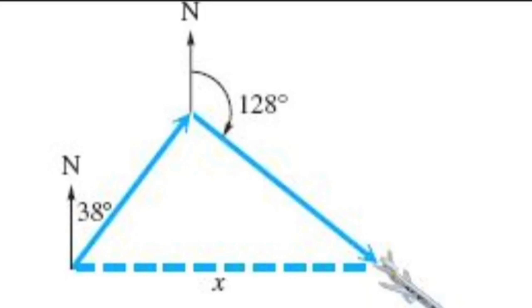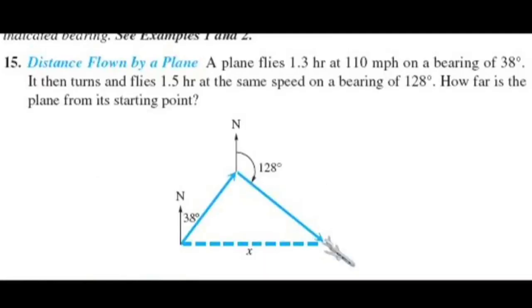Here, it looks like we're starting from this position over here. The plane is flying at 38 degrees from north in the easterly direction. So that's this. And it flies at 110 miles an hour. For how long? 110 miles an hour for 1.3 hours.